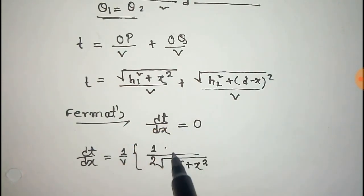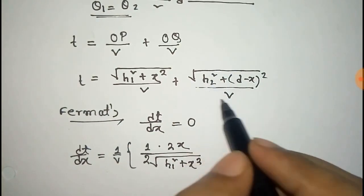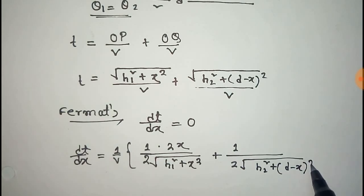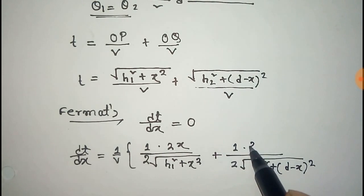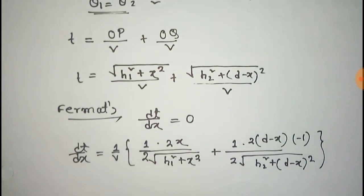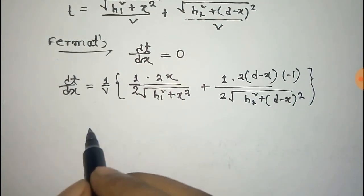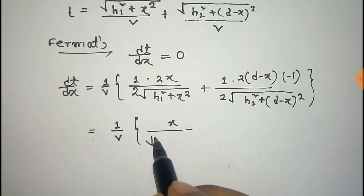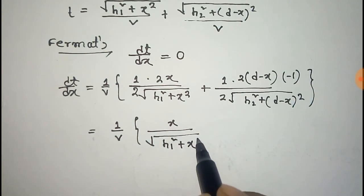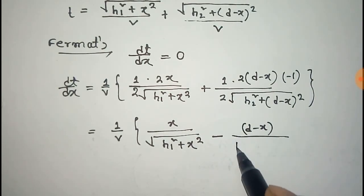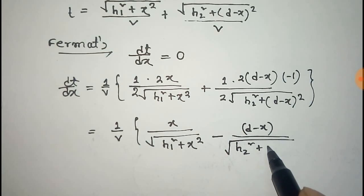The derivative of X squared gives 2X, plus the derivative of the second term gives 1 over 2 root over (H2 squared plus (D minus X) squared), and the derivative of (D minus X) squared is 2(D minus X) times minus 1. The 2's cancel out, leaving X over root over (H1 squared plus X squared), minus (D minus X) over root over (H2 squared plus (D minus X) squared).